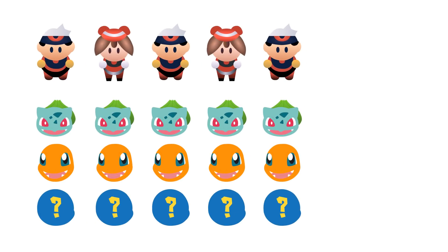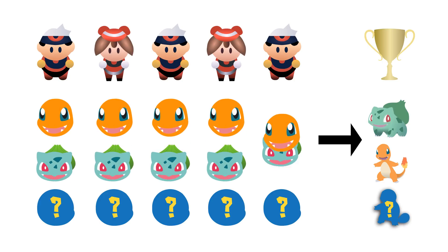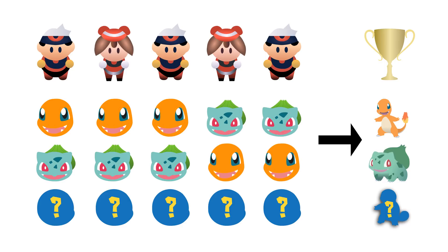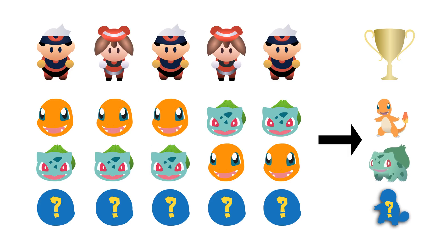Let's pretend we have a situation where every trainer puts Bulbasaur above Charmander. Because of unanimity, the result is that Bulbasaur beats Charmander. Now, one at a time, we imagine each voter instead had Charmander at the top of their list. Eventually everyone will have Charmander at the top, and by unanimity, Charmander must beat Bulbasaur. This means that at some point, one specific person moving Charmander to the top will cause the result to flip from Bulbasaur beating Charmander to Charmander beating Bulbasaur. This person is pivotal for Charmander to beat Bulbasaur, and we'll call him Mr. F.